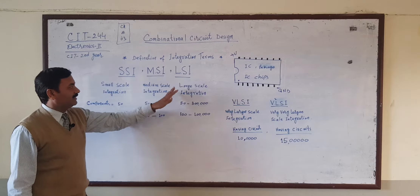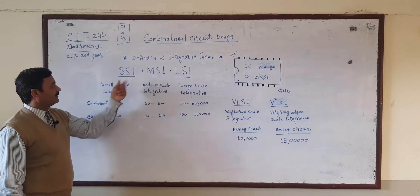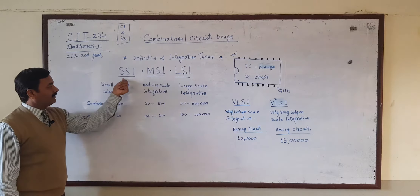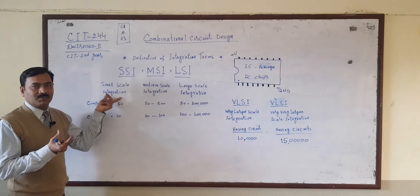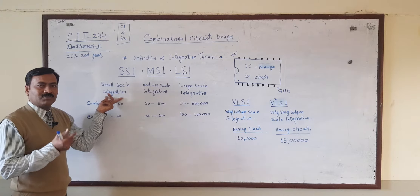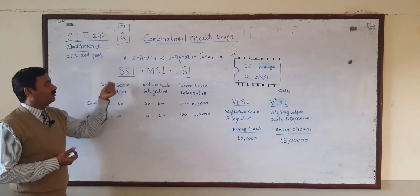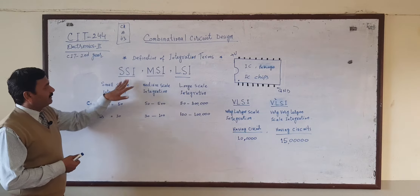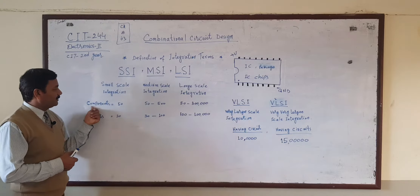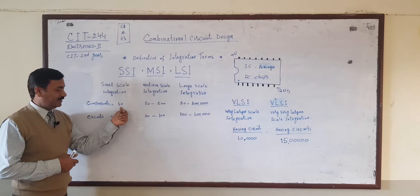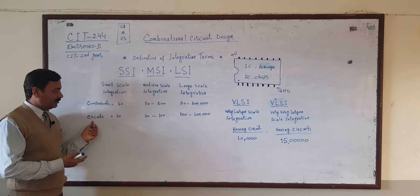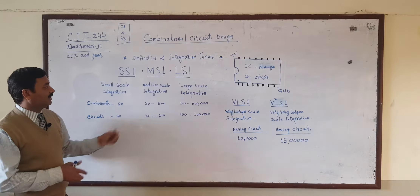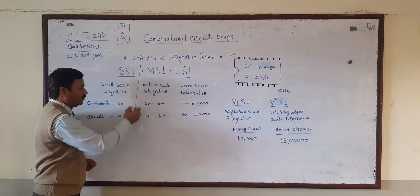SSI is called Small Scale Integration. In SSI, the ICs have just a few components combined with circuits — only about 30 to 50 components. These are the ICs that were used in the beginning.